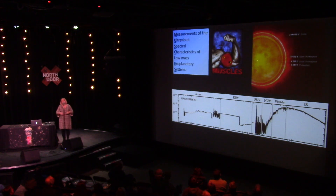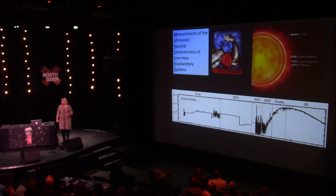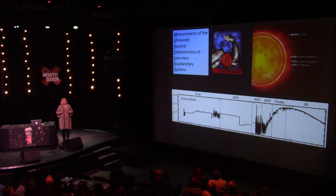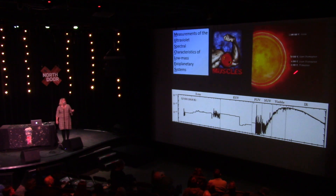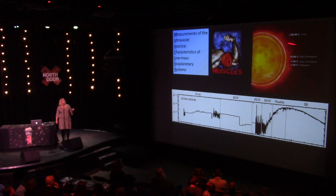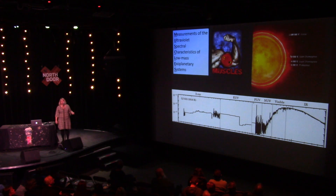What we're doing is getting a representative sample of different types of red dwarfs — different ages, different masses, different activity levels — to understand how the high energy emission coming from these objects is going to affect the planets orbiting around them. Now, I told you that red dwarfs are much less luminous than the Sun in their surface emission — what we see in the infrared and visible light. But these are very active stars. Just like our Sun, they have active chromospheres and a hot stellar corona where you can get up to a million degrees. On these low-mass stars, that really hot extended gas above the surface can actually be stronger than around the Sun.